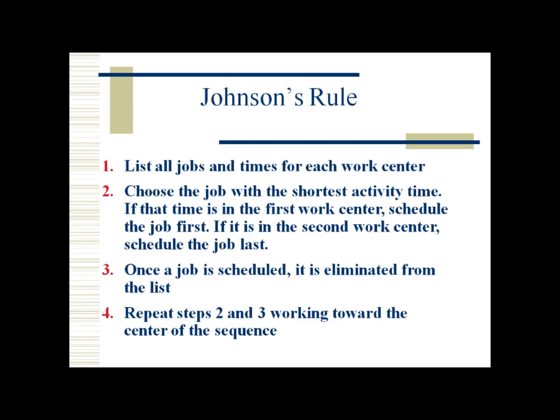Here are the steps in performing Johnson's Rule or Johnson's Algorithm. The first step is to list all the jobs and the times for each work center — work center or machine are the same. For the second step, choose the job with the shortest activity time. If that time is in the first work center, we are going to schedule that job first. However, if the smallest number is found on the second work center, we are going to sequence that job last. For step three, once a job is scheduled, it is eliminated from the list. The last step is to repeat steps two and three, working toward the center of the sequence.